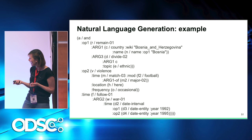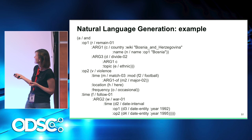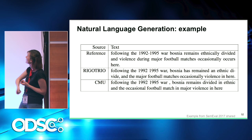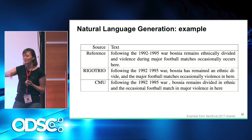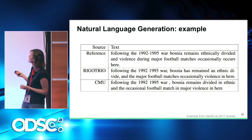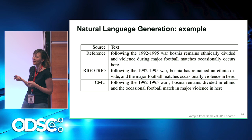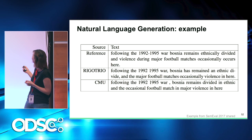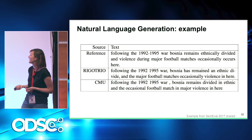Both events also have a temporal modifier saying this all happens following the war from 1992 to 1995. The reference sentence is: 'Following the 1992–1995 war, Bosnia remains ethnically divided and violence during major football matches occasionally occurs here.' The first system generated: 'Following the war, Bosnia has remained an ethnic divide' — a nice paraphrase — but then screwed up: 'and the major football matches occasionally violence in here.' The second system's output also has some gibberish. So there's a lot of work to do, but this was a very complicated example.